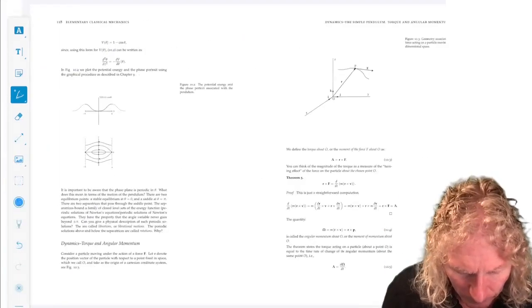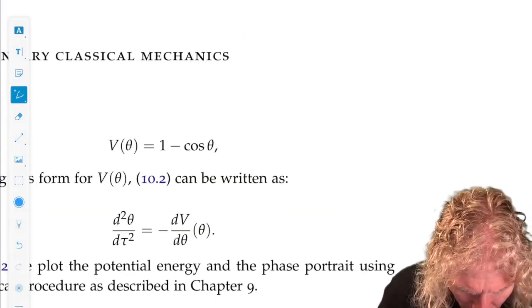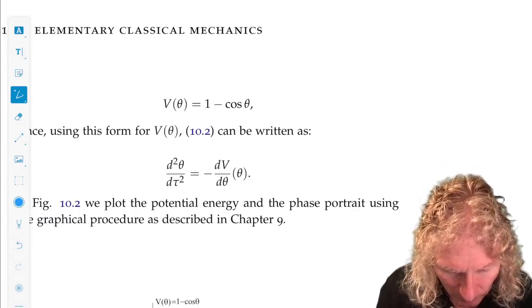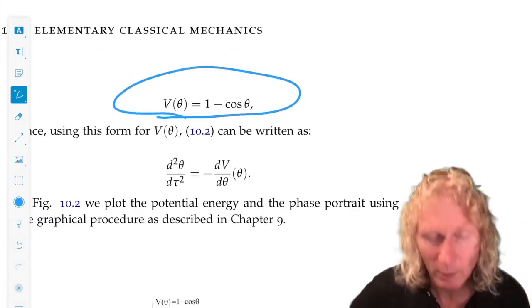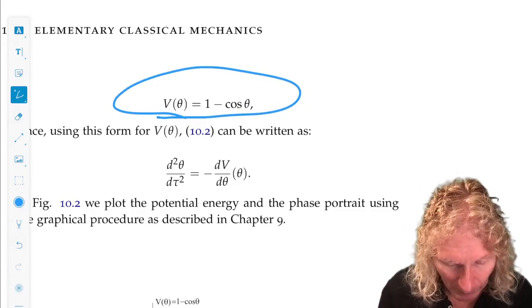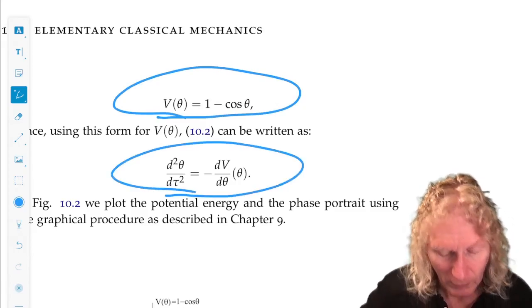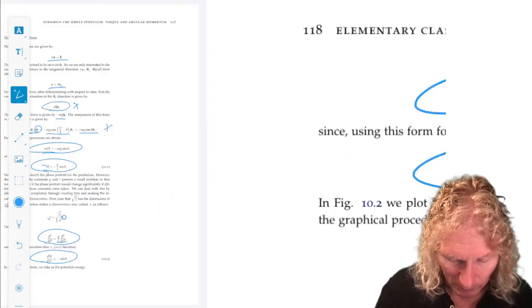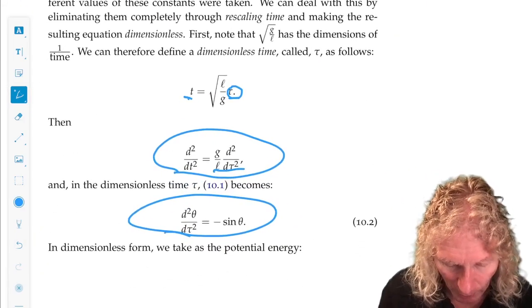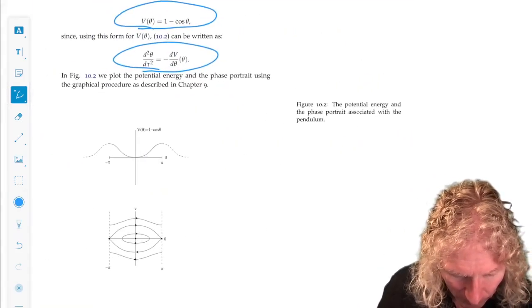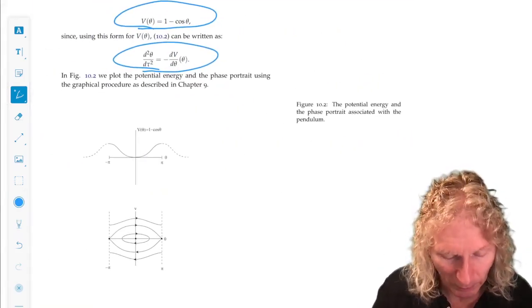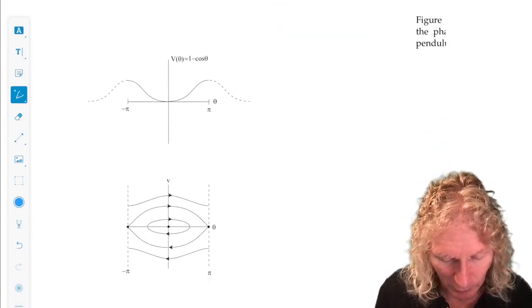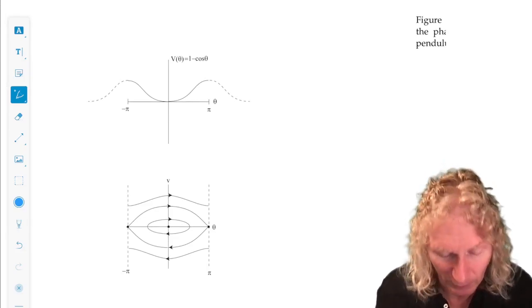If we write the potential energy in this form, v of theta equals 1 minus cosine theta, this is the equation of motion in the rescale time. The nice thing about this is we have exactly the form of the equations that we analyzed in the last chapter using phase plane analysis.